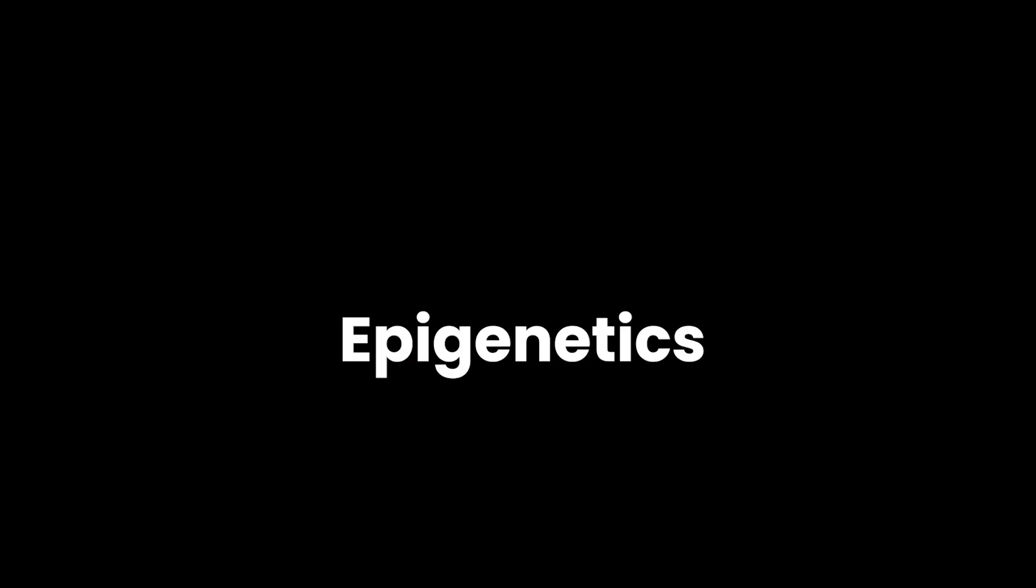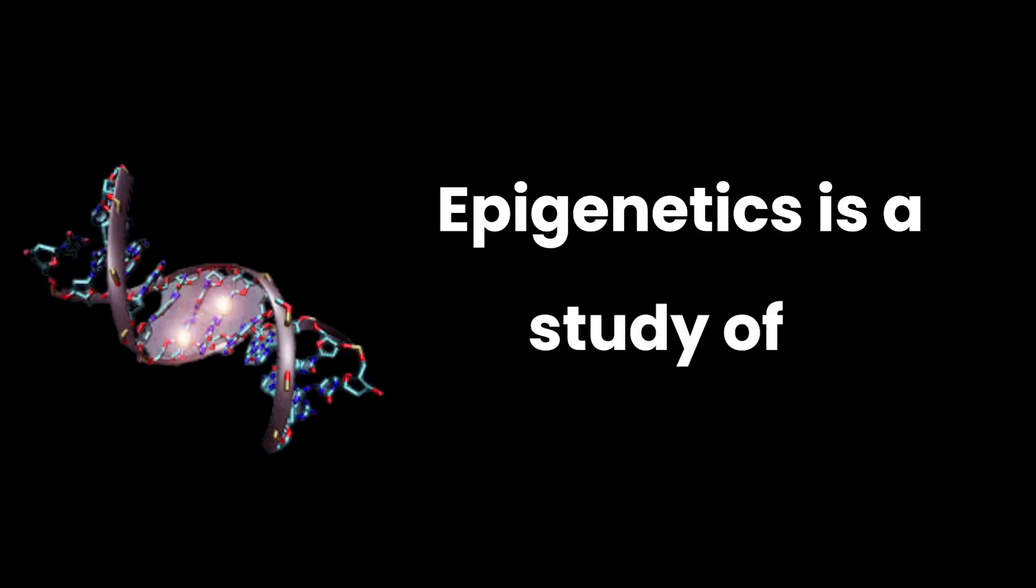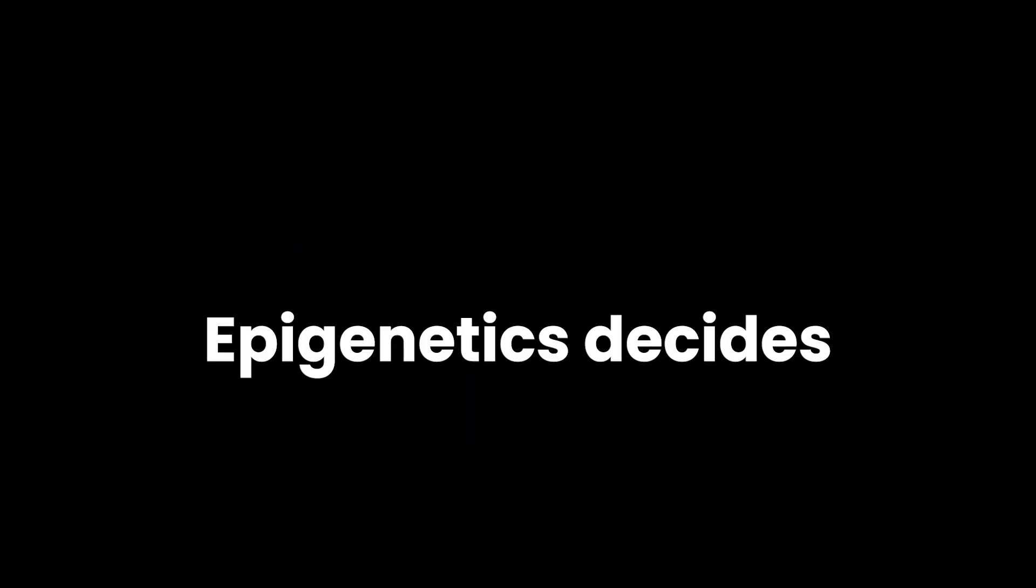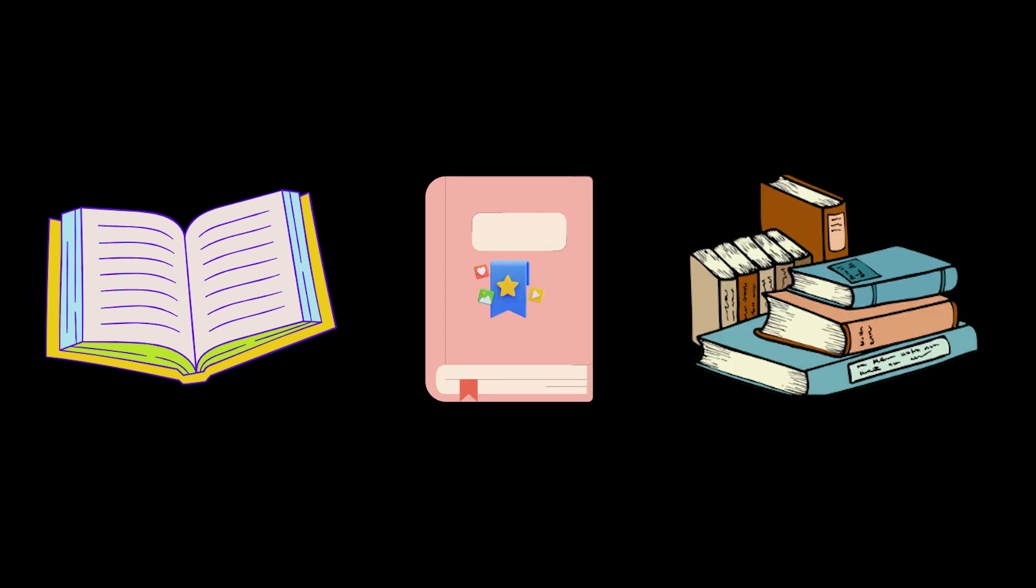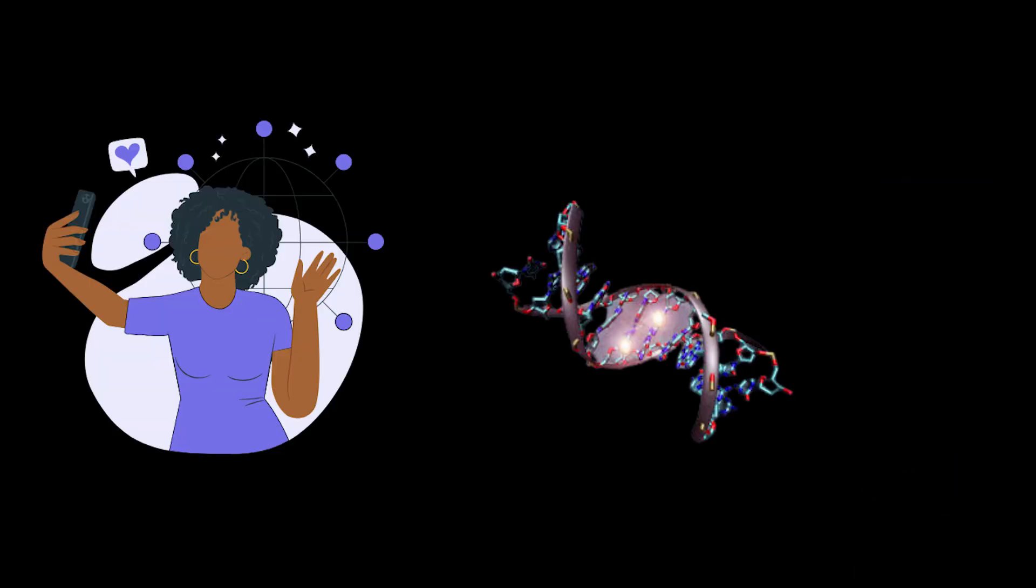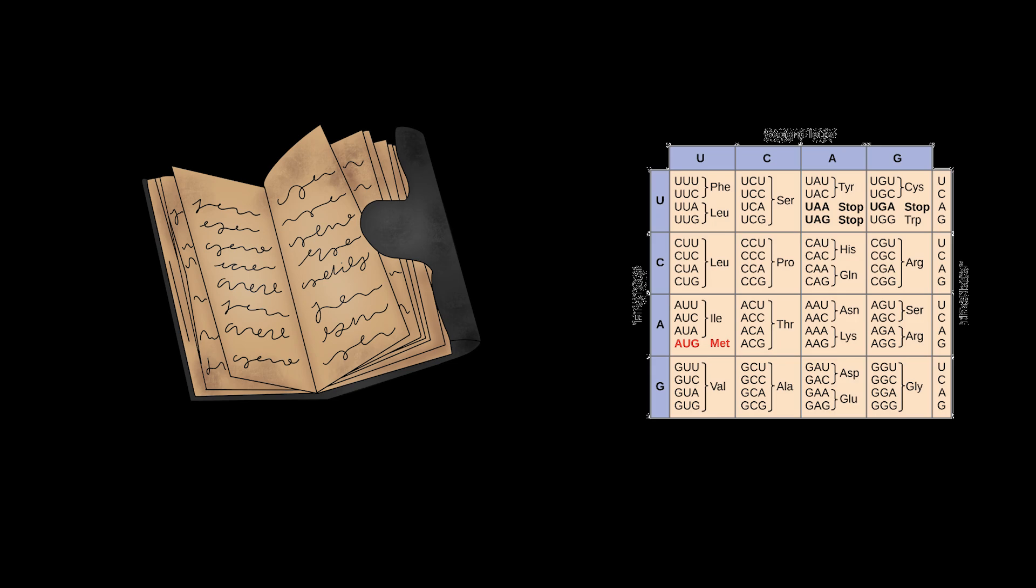This brings us to something important. Epigenetics. Epigenetics is a study of how genes can be turned on or off without changing the DNA sequence. This happens through chemical tags added to DNA or histones. Think of your genome as a library. Epigenetics decides which books are open, bookmarked, or sealed shut. Stress, diet, sleep, temperature, exercise. They can all influence epigenetic activity. These changes don't rewrite the DNA code, but they change how the code is used.